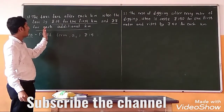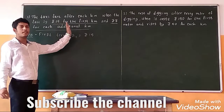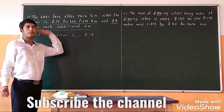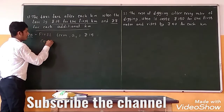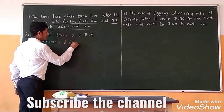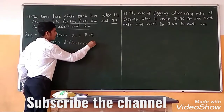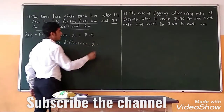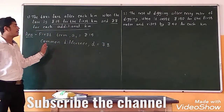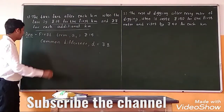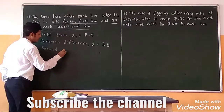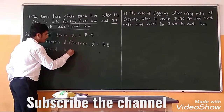After the first kilometer, for the next kilometer it increases with a constant of rupees 8. That means the common difference d is rupees 8. Now we have to find out the taxi fare for each kilometer — that means for the second kilometer.